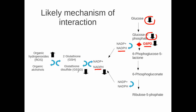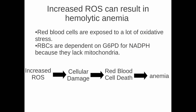With less NADPH, you have less glutathione disulfide, and then you have more reactive oxygen species. This is particularly bad in red blood cells because they are exposed to a lot of oxidative stress and have more reactive oxygen species than most other cells. Red blood cells are also dependent on glucose-6-phosphate dehydrogenase for NADPH production because they lack mitochondria. The increased reactive oxygen species results in cellular damage, red blood cell death, and if too many red blood cells die, the patient gets anemia.